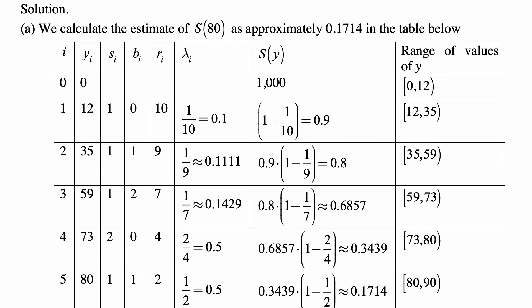And here's the calculation. We calculate the estimate of S(80) as approximately 0.1714 in the table below. And you have these values of the times of death y_i, the number of those, the people leaving and exposure, and then lambda calculated from that, and S(y) calculated from the values given below.